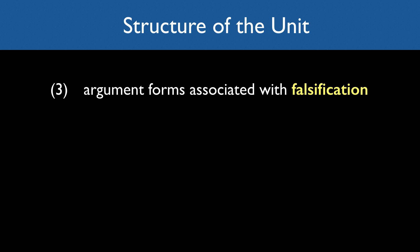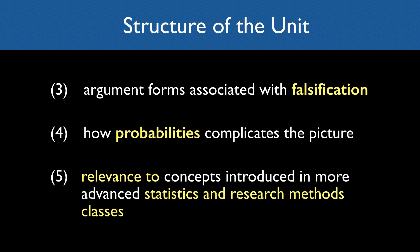Basic argument forms associated with how falsifying evidence can be represented and interpreted. I'll add some comments on how probabilities complicate the picture a little bit, and then finally connect this basic logical material to concepts that scientists are exposed to in their statistics and research methods classes, but that they struggle to understand because the simple logic underlying them is obscured by mathematical details.